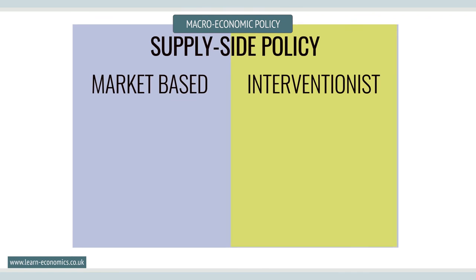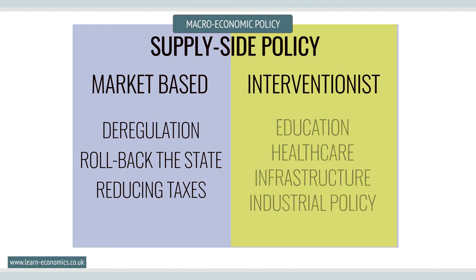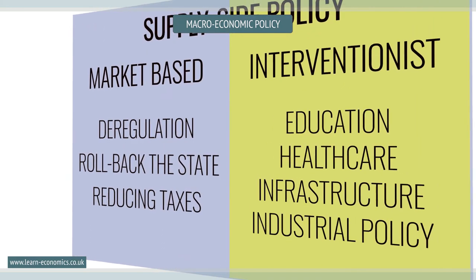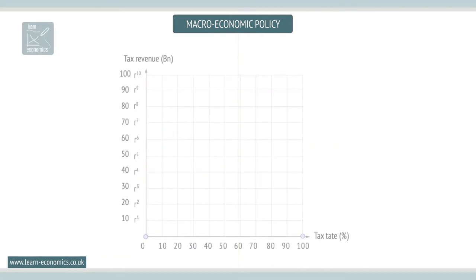Supply-side policies are often categorized in terms of whether they try to enhance the workings of the free market economy — such as by deregulation and removing constraints imposed by government — or whether they involve more intervention by government, such as increased spending on education, healthcare, and infrastructure. Reducing marginal tax rates can achieve an incentive effect as it can encourage people to work. The Laffer curve can help illustrate this effect.